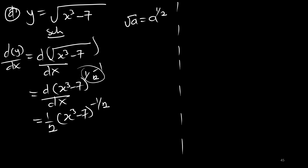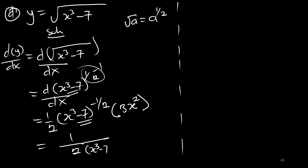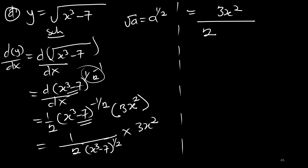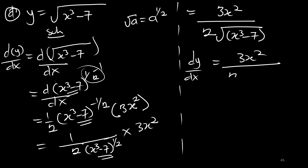Then multiply the whole expression by the derivative of what is in the bracket, which is 3x squared. The one half comes down so we have x cubed minus 7 to the positive one half in the denominator, which is the square root of x cubed minus 7. Therefore dy/dx equals 3x squared over 2 times the square root of x cubed minus 7.